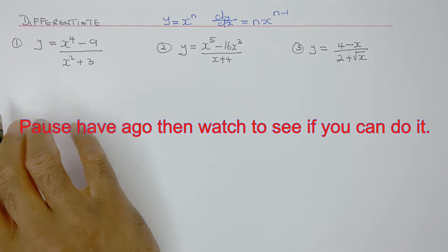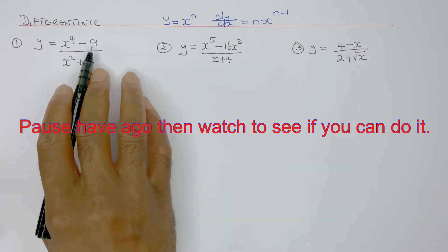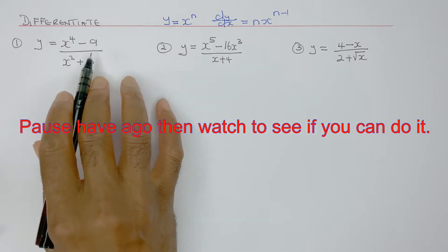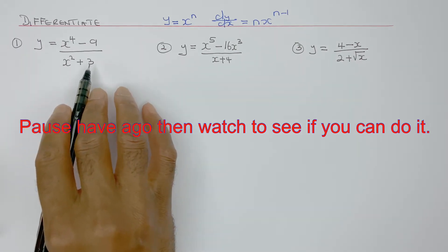Differentiate. Question 1: x to the power 4 minus 9, over x squared plus 3.